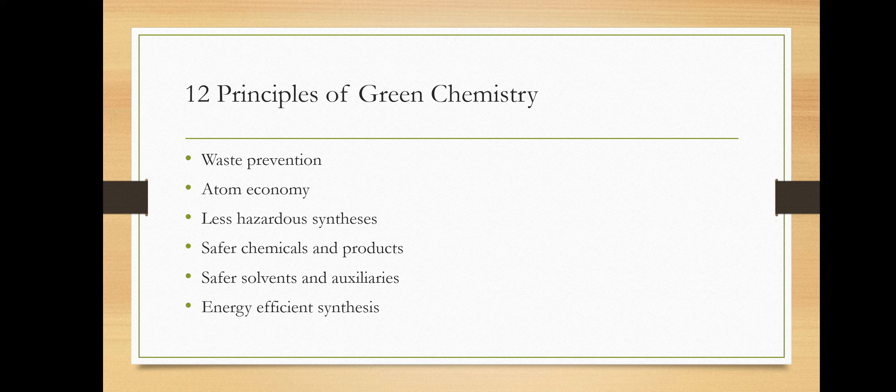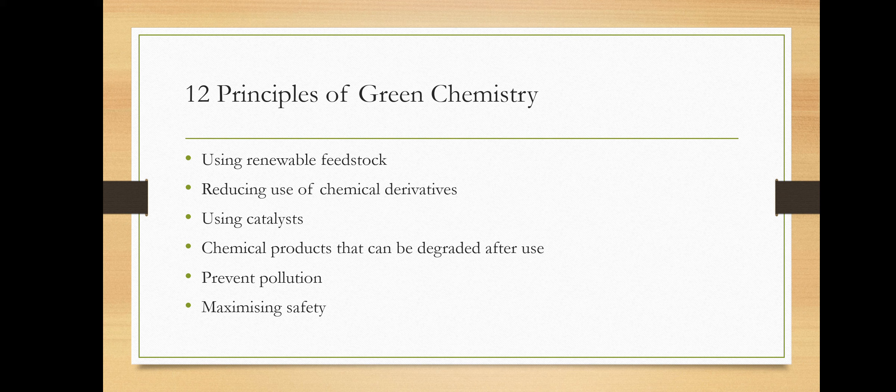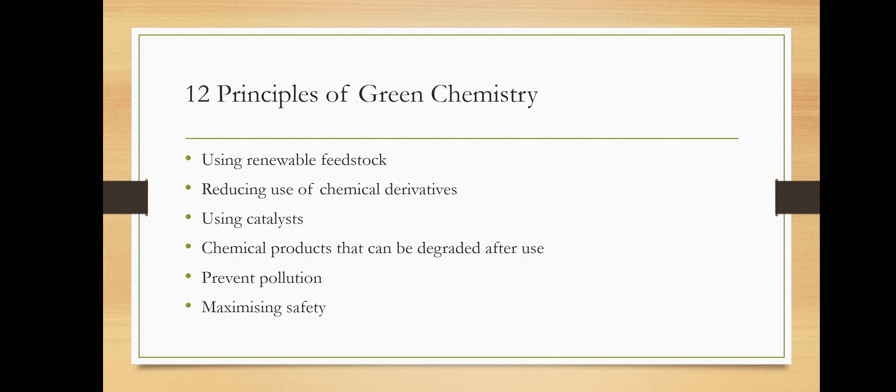The 12 principles of green chemistry are: prevention of waste, maximizing atom economy, designing less hazardous chemical synthesis, designing safer chemicals and products, use of safer solvents and auxiliaries, designing energy-efficient synthesis, use of renewable feedstocks, reducing the use of chemical derivatives, using catalysts instead of stoichiometric reagents, designing chemical products that can be degraded after use, analyzing real-time data to prevent pollution, and maximizing safety to prevent accidents.